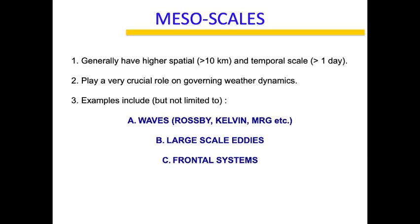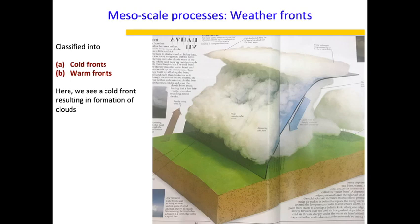If we go a little deeper, a frontal system is nothing but a cold front or a warm front. Here I'm showing a cold front, wherein a cold mass of air is blowing and uplifts the warm air, leading to formation of these cloud bands. These frontal systems are mesoscale systems because they are a few tens of kilometers long — like 30, 40, 50 kilometers — and they occur on a timescale of around two to three days.